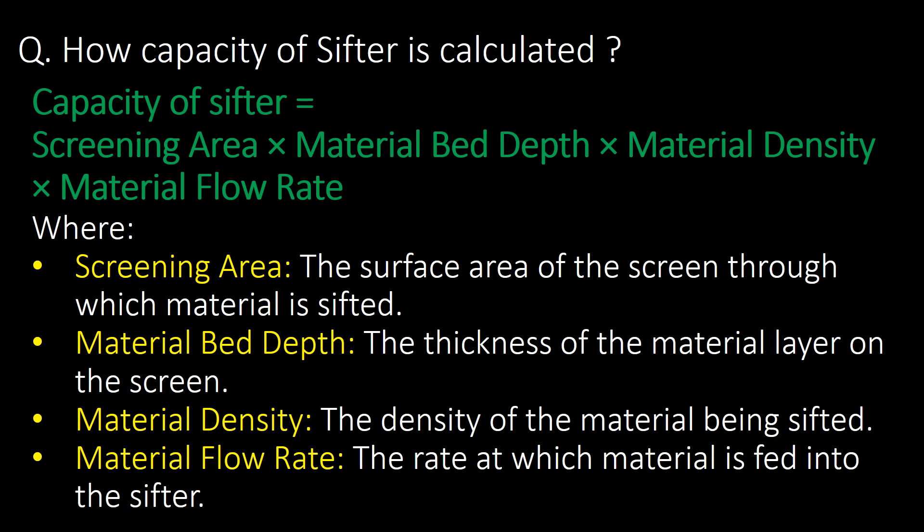How is the capacity of a shifter calculated? Capacity of shifter equals screening area multiplied by material bed depth multiplied by material density multiplied by material flow rate.